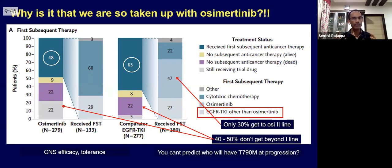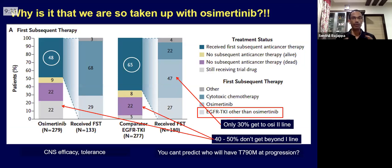The two other most important reasons why people use osimertinib are: CNS efficacy, which is absolutely superior compared to all other options, and tolerability, which is also superior. This one slide tells you the most important reasons why osimertinib seems to be the best choice for most patients diagnosed with an EGFR mutation positive lung cancer.